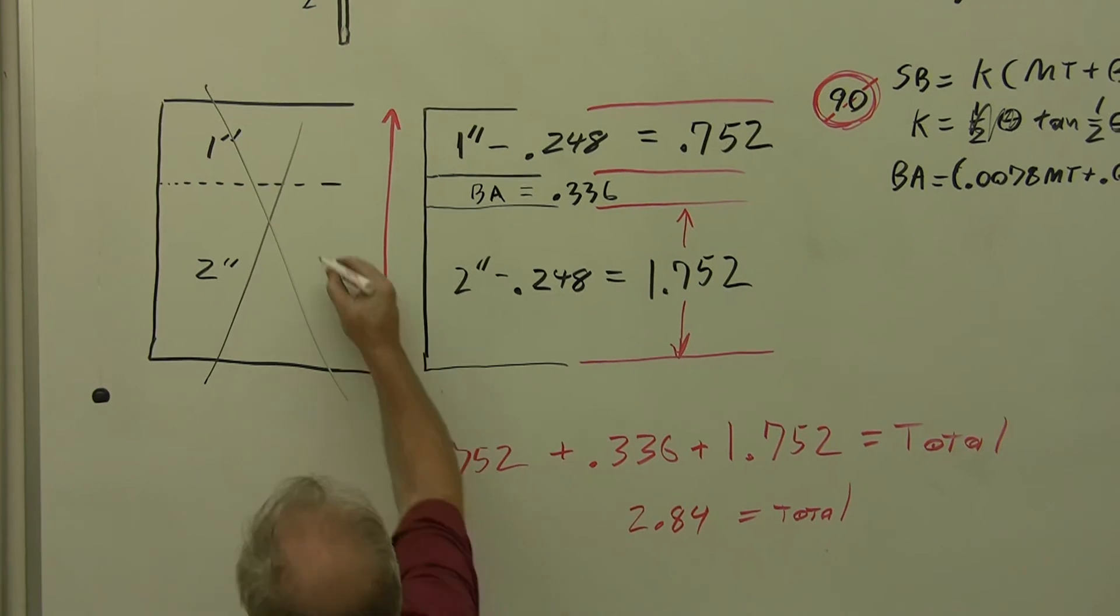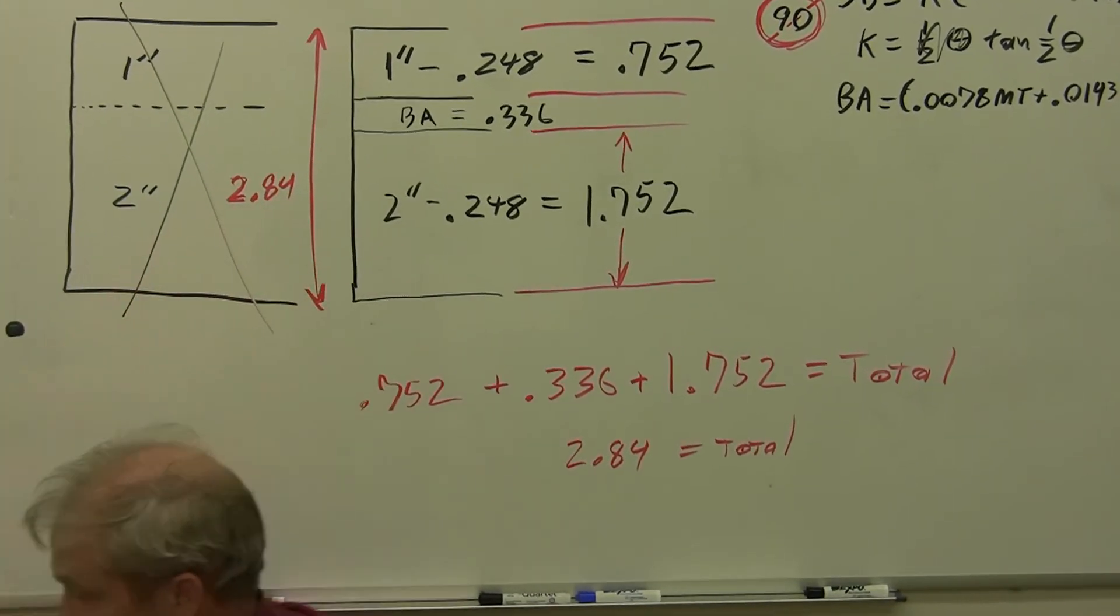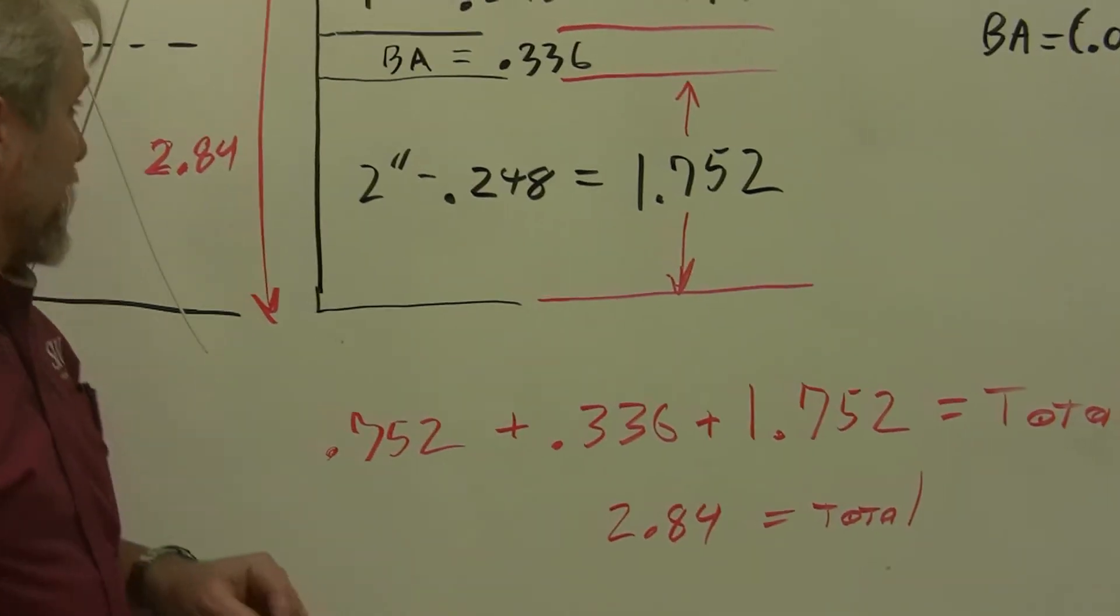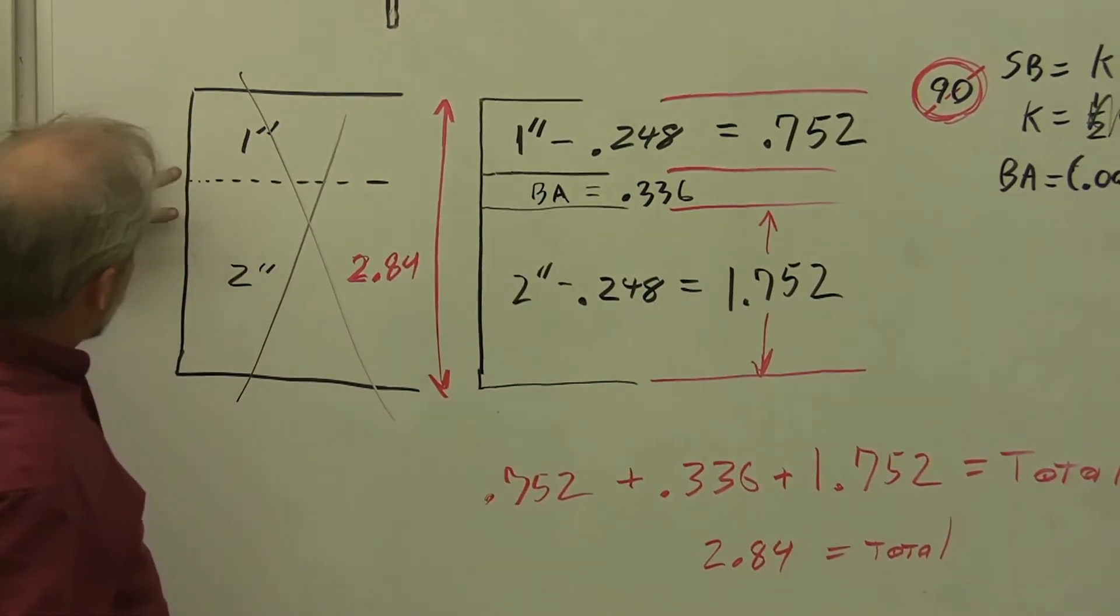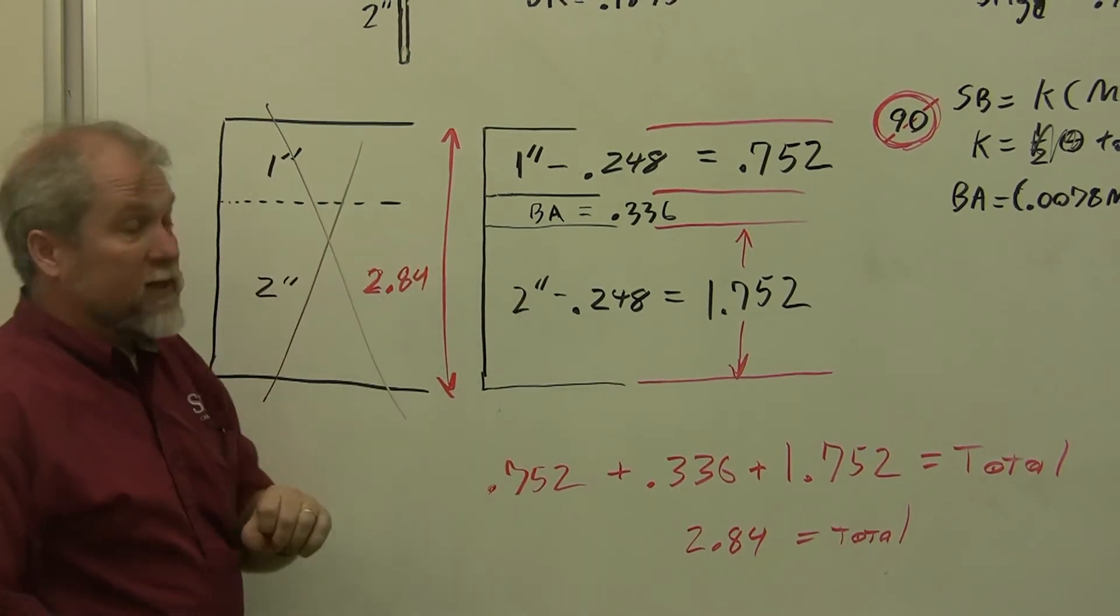2.84 equals the total. We're going to come over here, 2.84. And you'll recall, I told you that there is a reality check. And the reality check is, this should be a little less than the total amount would be if we didn't cut the corner. This would be 3, this is 2.84. That's a very realistic number.